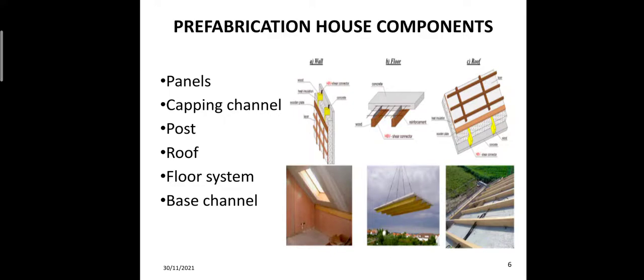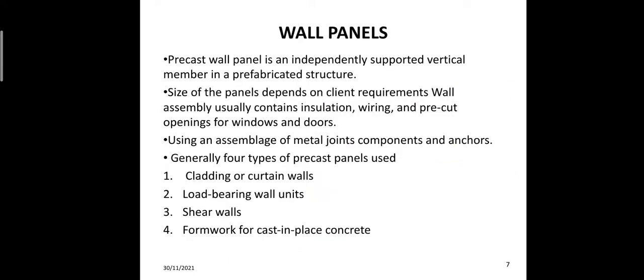Prefabrication house components include: panel, capping channel, post, roof, floor system, base channel, and wall panels. A precast wall panel is an independently supported vertical member of a prefabricated structure. The size of the panel depends on client requirements. Wall assembly usually consists of installation, wearing, and pre-cut openings for windows and doors using an assembly of metal joint components and anchors.